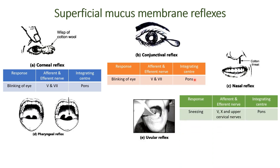The third one is the nasal reflex. We'll touch the nasal mucosa of an individual by inserting a cotton thread inside the nostril. The response of this reflex is sneezing. The afferent and efferent nerves involved are the fifth, tenth, and upper cervical nerves, and the integrating center is the pons.